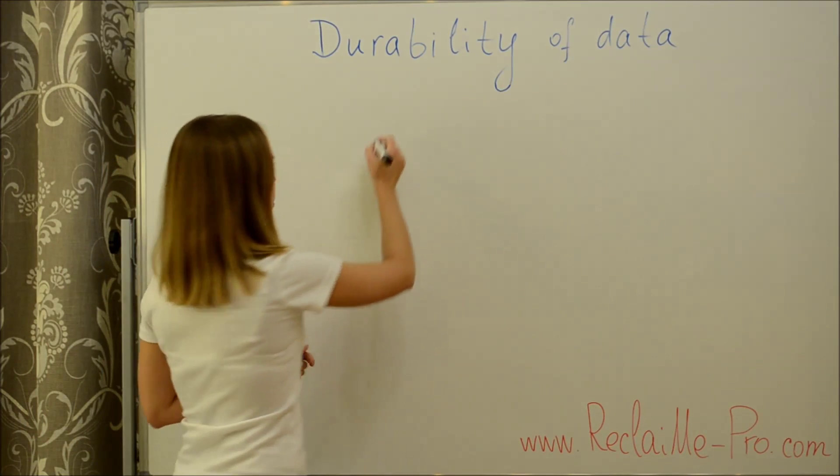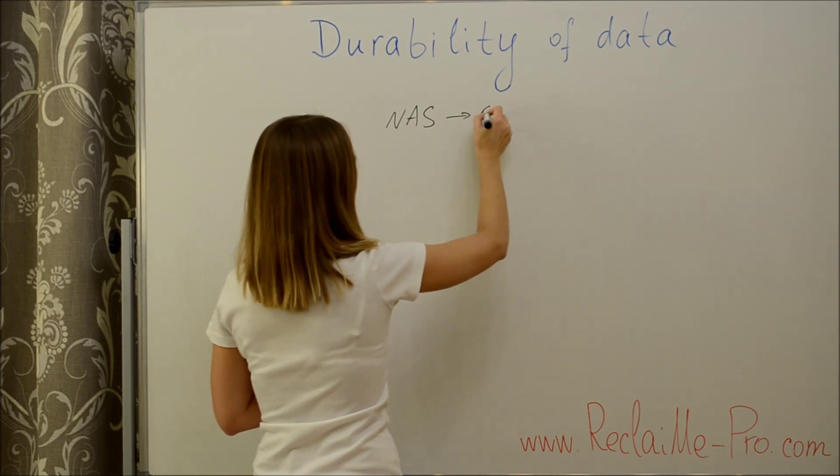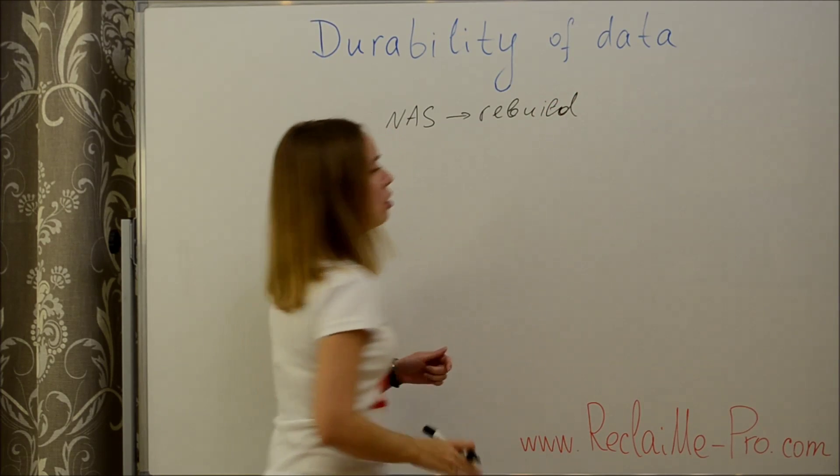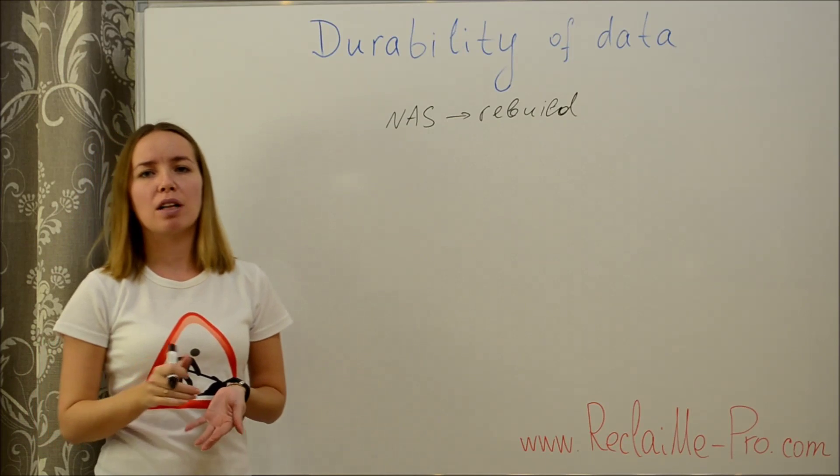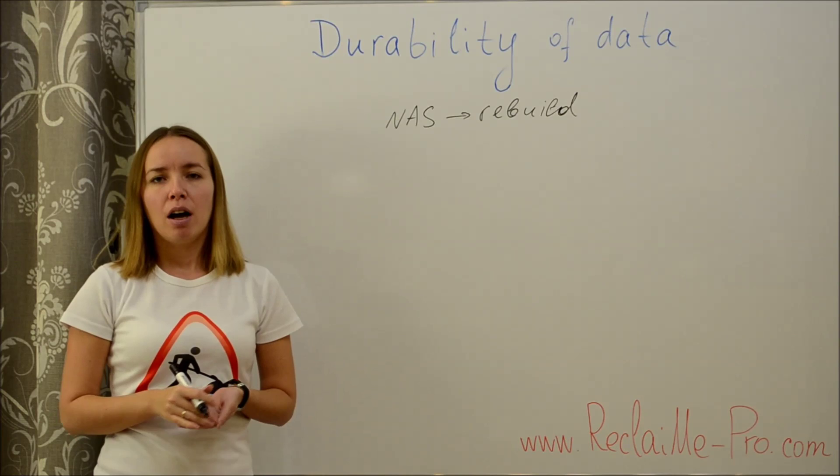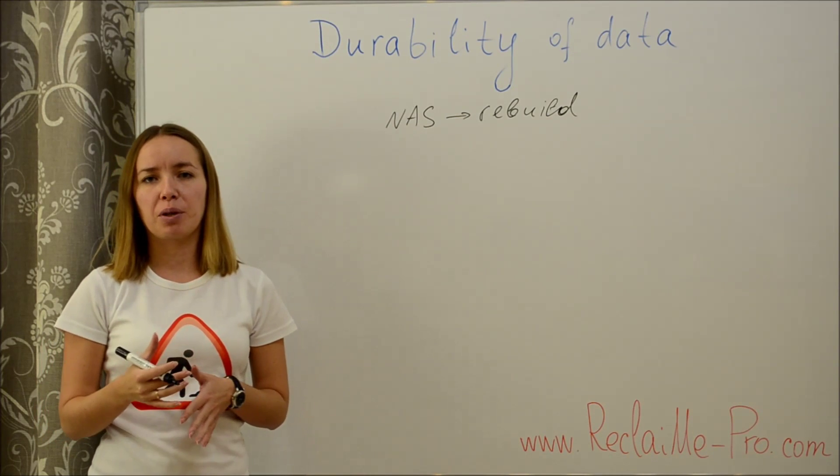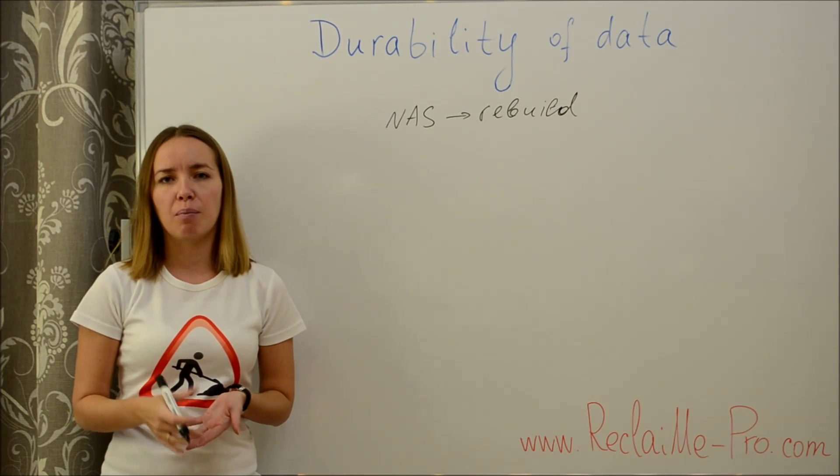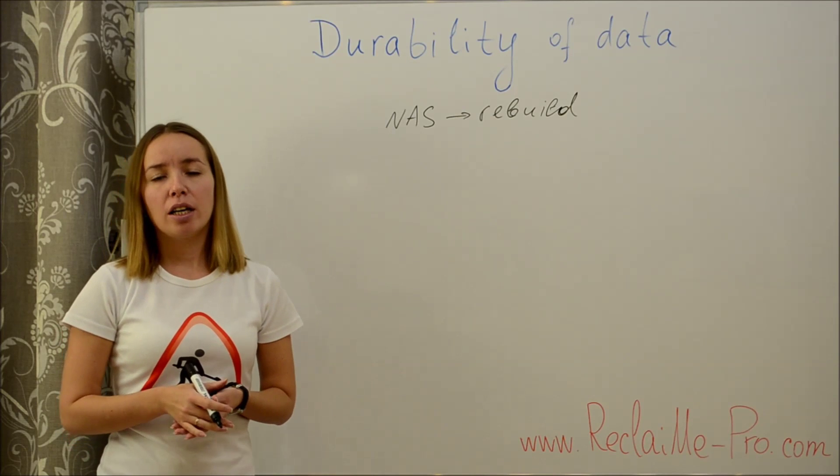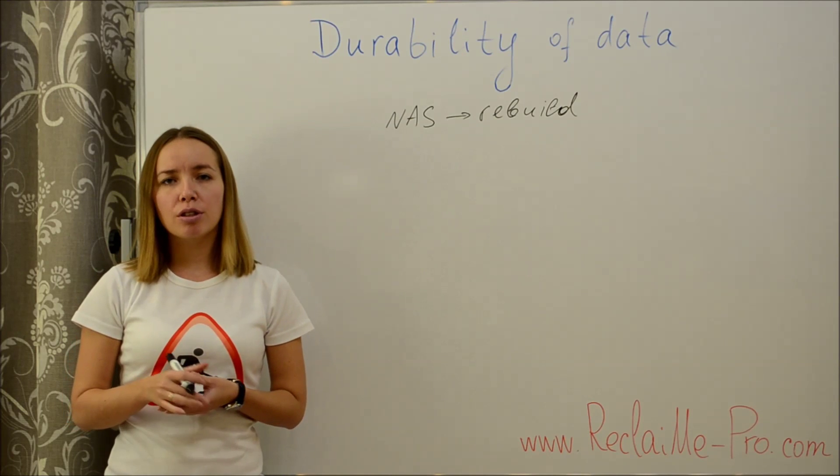As for network attached storage, at some moment it may decide to rebuild an array. For example, due to a transient failure, a situation when one of the array member disks drops off the raid and then comes back. If it is limited only to a disk failure, nothing bad happens. But if NAS mixed up the metadata and disk order became incorrect, it could easily be that data recovery is impossible.